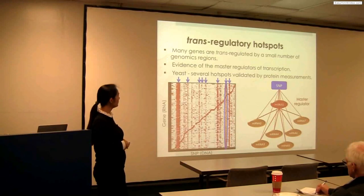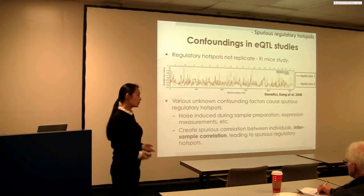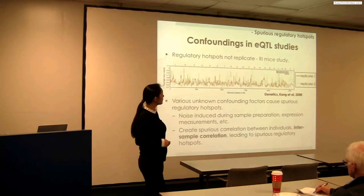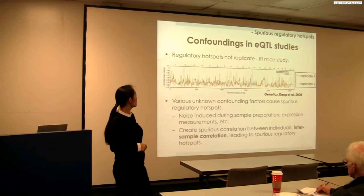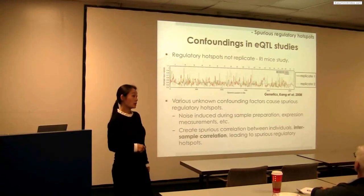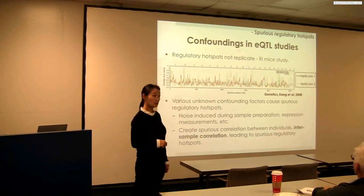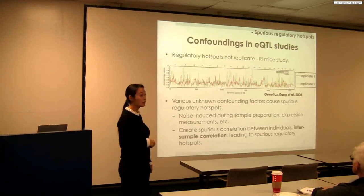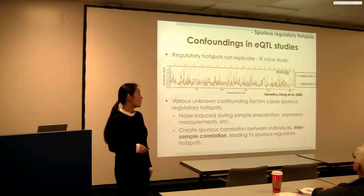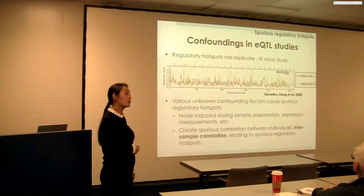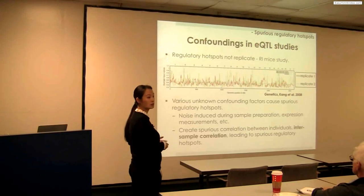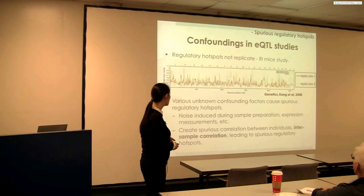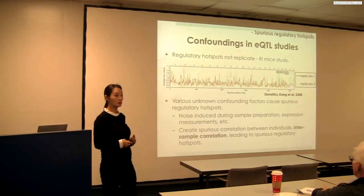Studies of EQTL have provided much evidence supporting the existence of master regulators that induce trans-regulatory hotspots. However, several EQTL studies reported that regulatory hotspots replicate poorly. A graph from a 2008 genetics paper shows that regulatory hotspots between two replicates are so different they show a slightly negative correlation. Previous studies discovered these spurious associations are induced by various confounding factors such as batch effects or other technical artifacts that introduce noise during sample preparation or expression measurements.